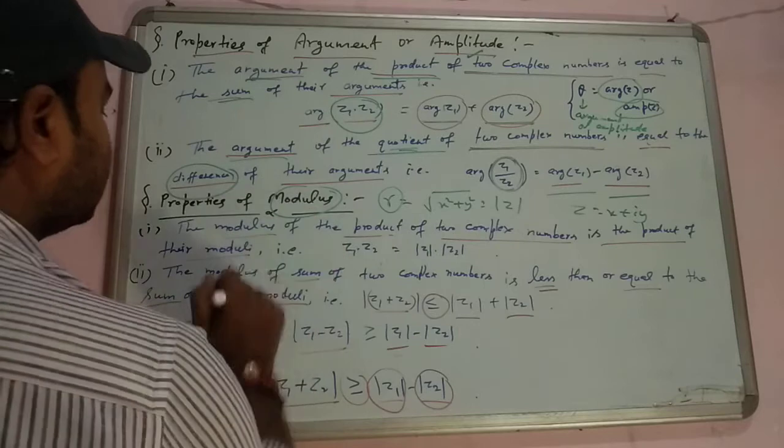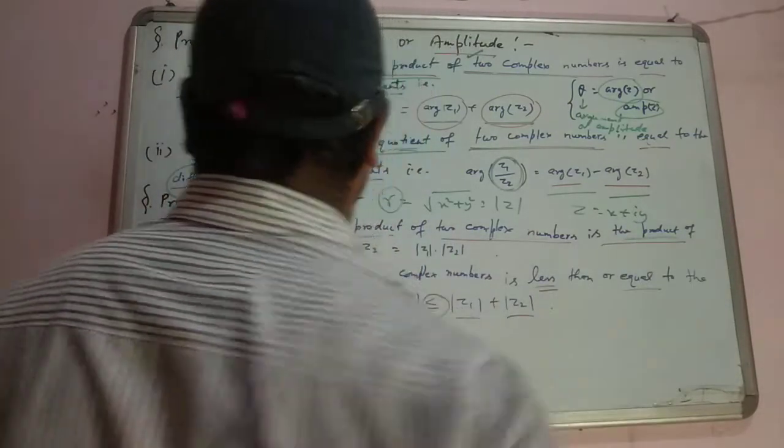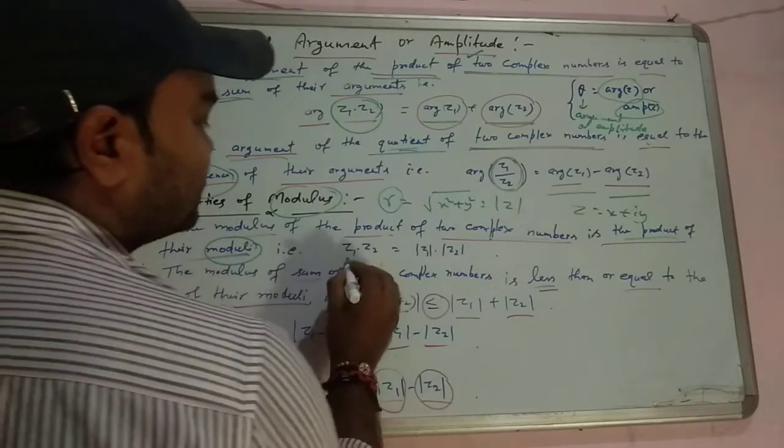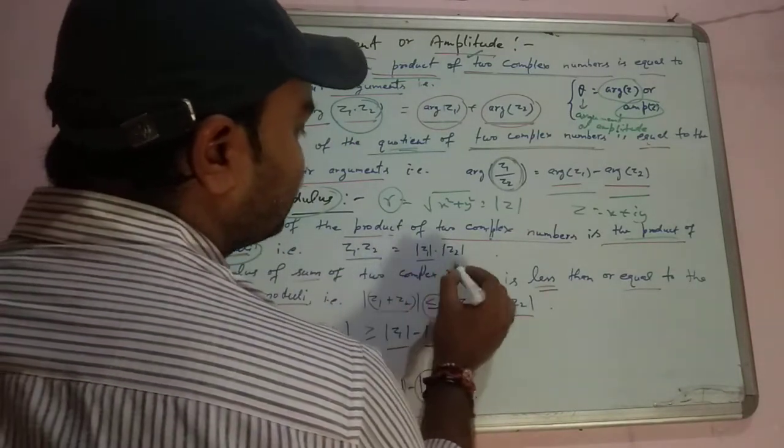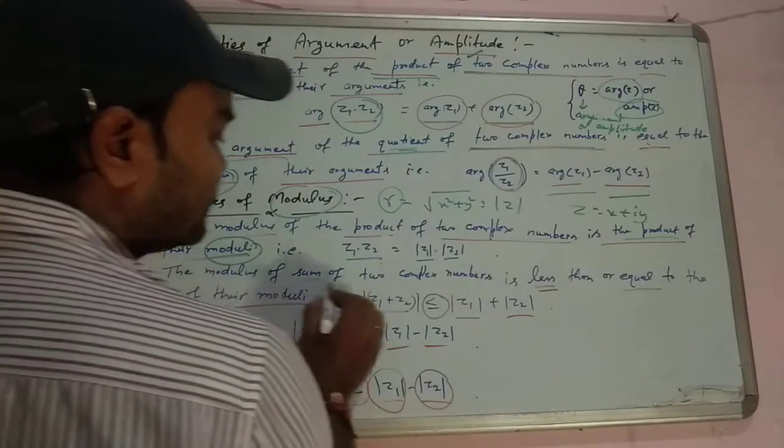Some properties of modulus: the modulus of the product of two complex numbers is the product of their moduli. So mod of z1 times z2 equals mod of z1 times mod of z2.